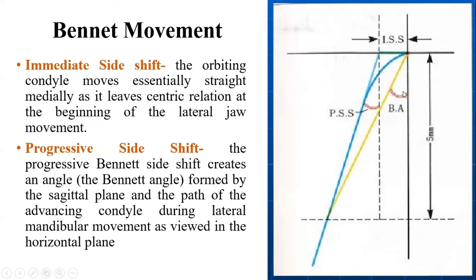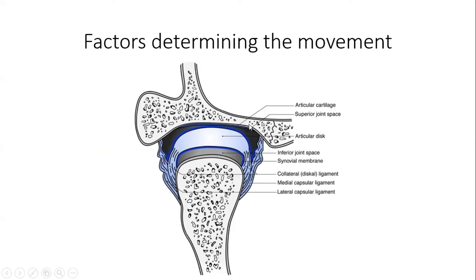Now what are the factors that determine the Bennett movement or immediate or progressive side shift? The first is the medial wall of the condylar fossa — if it is very steep there will be more movement, and if there is a gap between the wall and the condyle there will be more immediate side shift. The second factor is the tightness of the temporomandibular ligament — if the ligaments are very tight, there will be no lateral movement and the condyle will have to move in a straight line anteriorly. The third important factor is the medial pterygoid muscle.